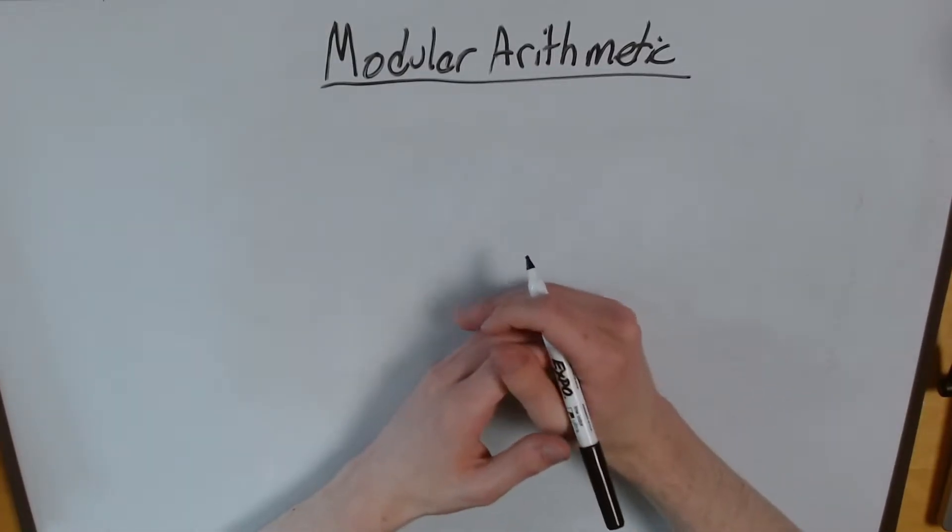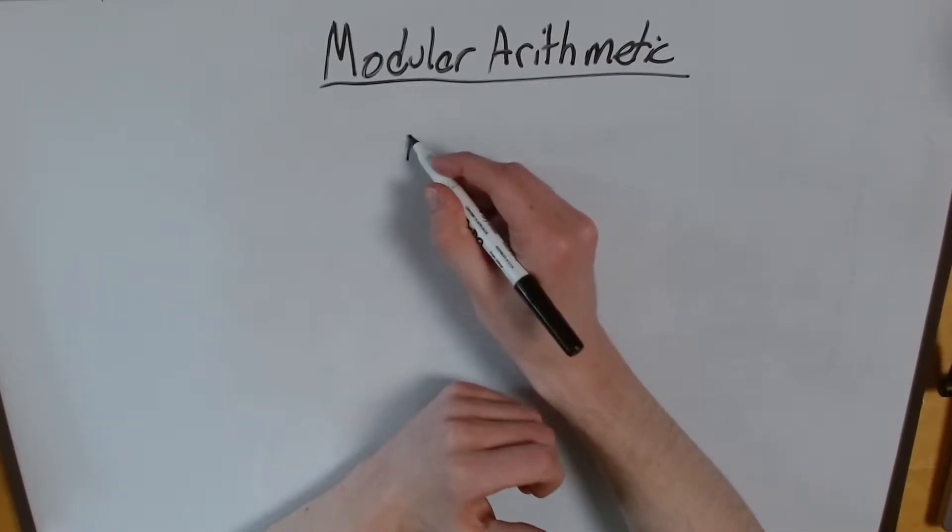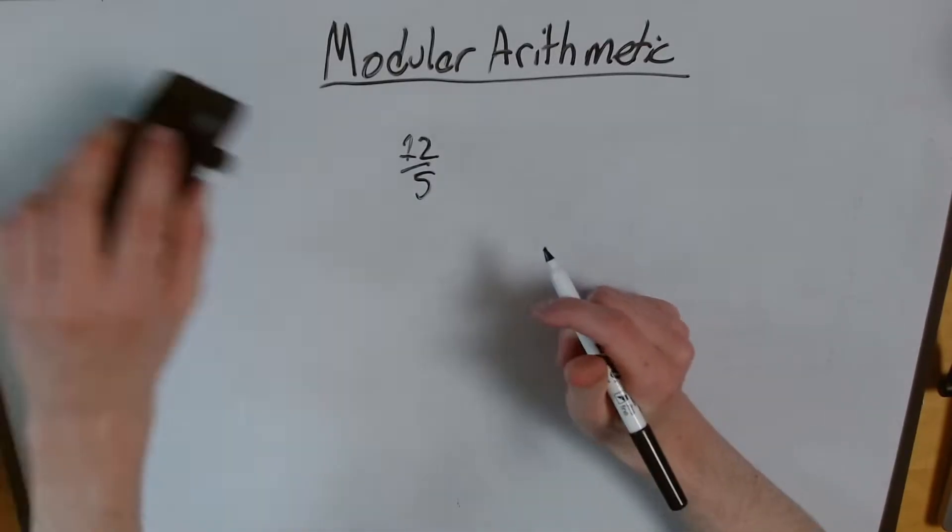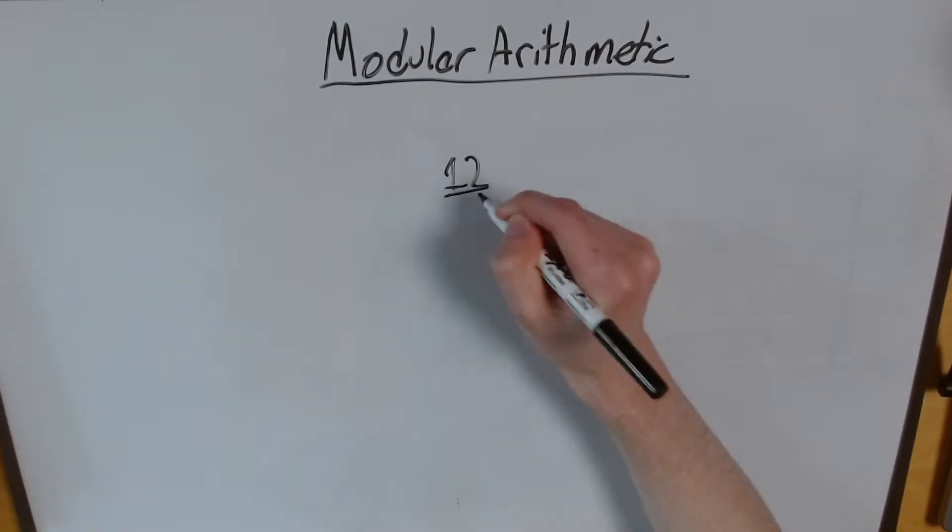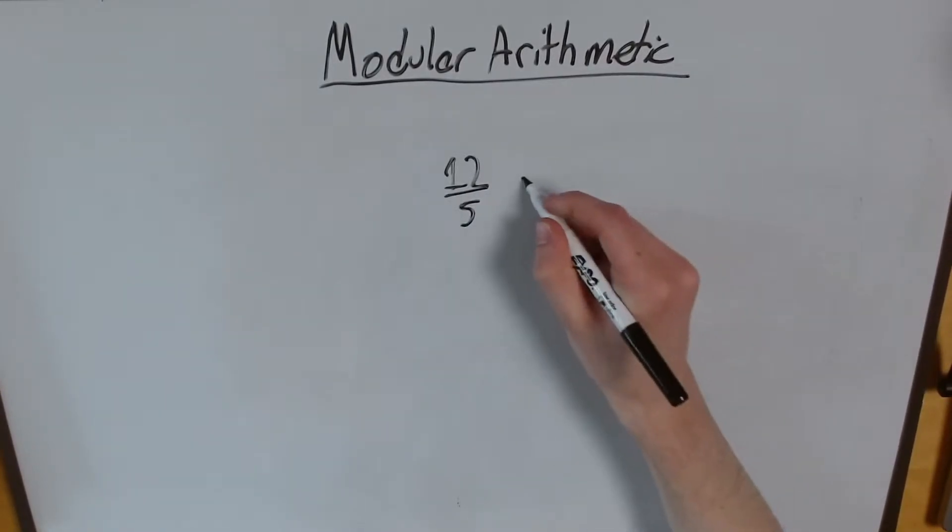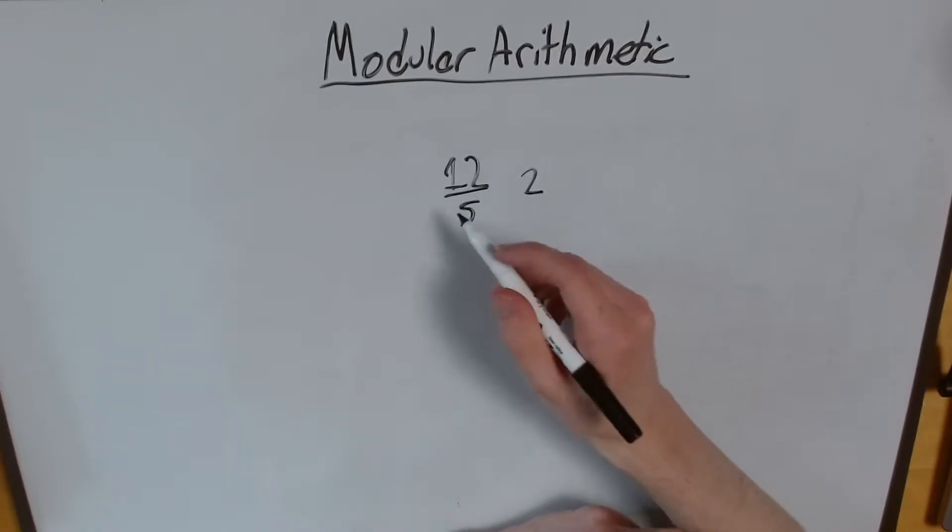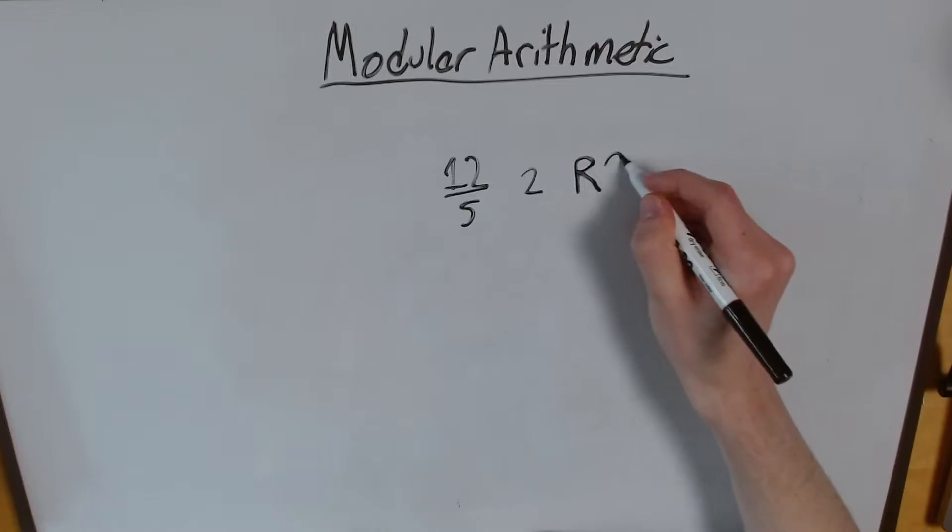So, first, what is modular arithmetic? Well, let's say I have 12 divided by 5, and if we wanted to do this in the basic elementary school way, we'd say that's 2, because 5 times 2 is 10, and 5 goes into 12 twice, with a remainder of 2.